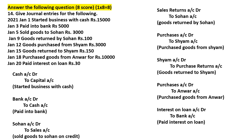We will learn how to journalize and post to the ledger. Rules of debit and credit: Assets and expenses increase on debit and decrease on credit. Liabilities, income, and capital — LIC — decrease on debit and increase on credit.